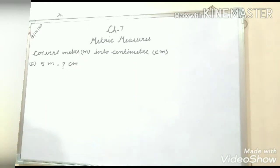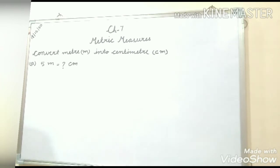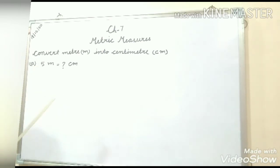In last class I taught you about meter and centimeter. Meter is the bigger unit and centimeter is the smaller unit. Meter is used to measure the length of longer things, and centimeter is used to measure things of shorter length.